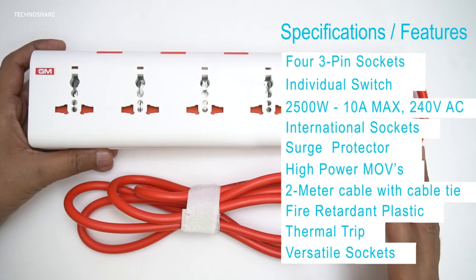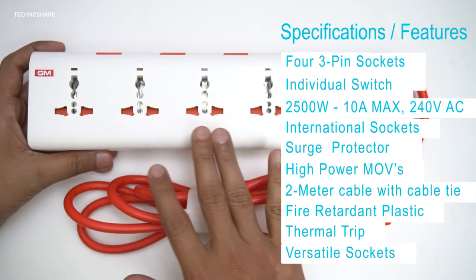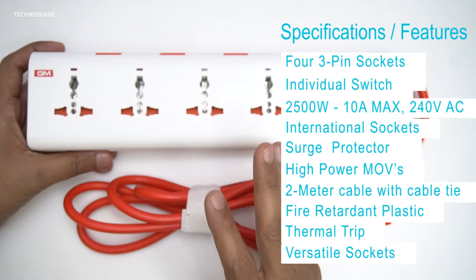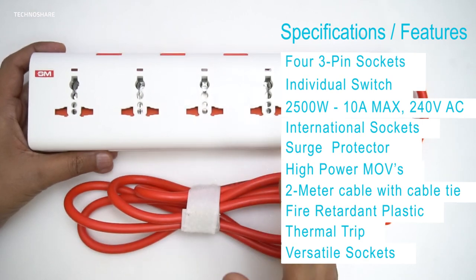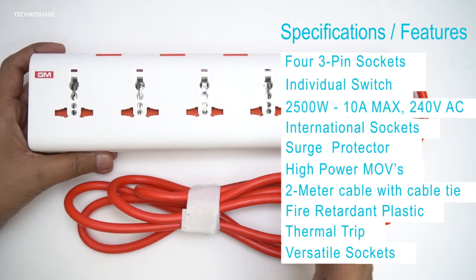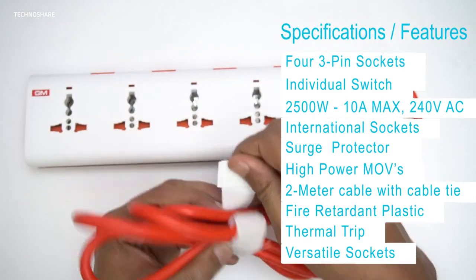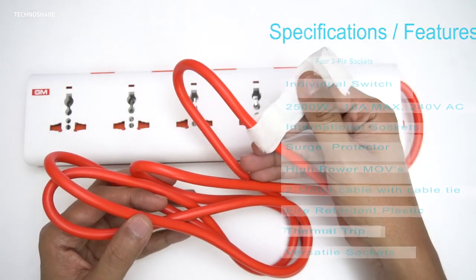The specifications of this product: it has got four three-pin sockets here and the total rating is 2500 watts. It operates on 240 volts AC and takes a maximum load of 10 amps current. It has a power cord of length two meters and there's also velcro provided here to keep it nice and tidy.